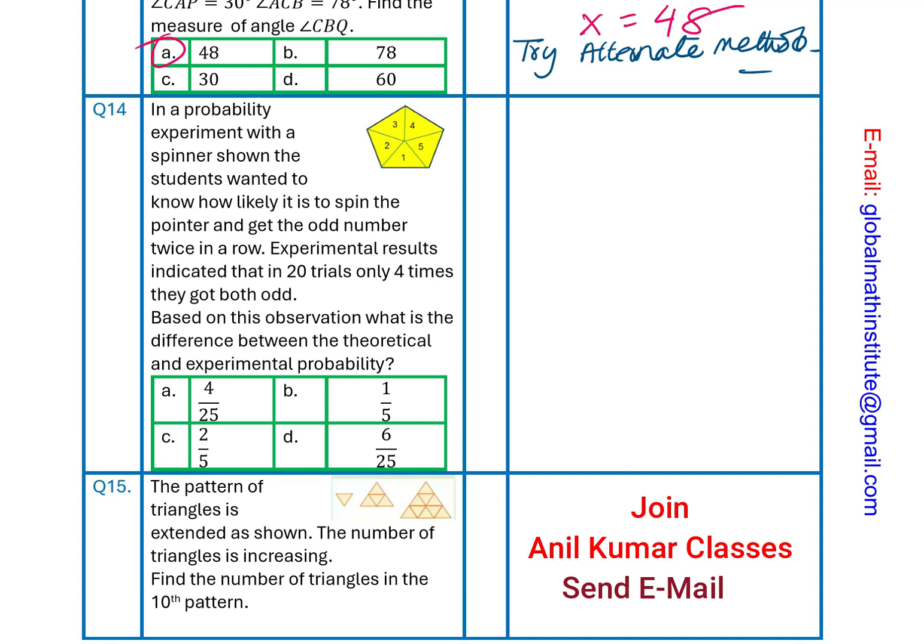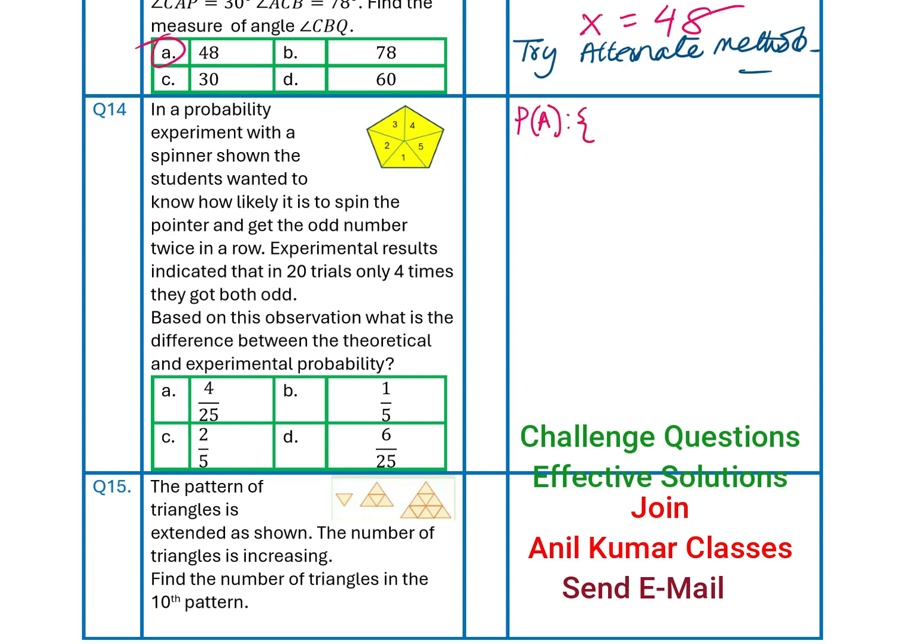Question number 14 is, in a probability experiment with a spinner shown, the student wants to know how likely it is to spin the pointer and get the odd number twice in a row. So, we need to get odd number. So, you are looking for an event A, which is odd number twice in a row.